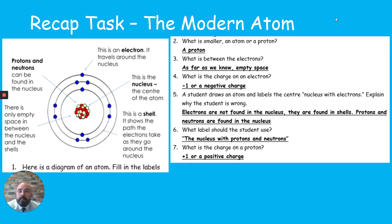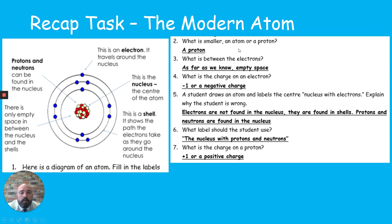Just a word of caution — when we look at atomic models, none of this is to scale, and we know electrons aren't blue and shells aren't like racetracks. It's a representation. The blue spheres are electrons, which travel around the nucleus in shells. The shell shows the path electrons take around the nucleus. In the centre we have the nucleus, which contains protons and neutrons, with empty space between the nucleus and the shells. As for what's between the electrons, as far as we know, it's empty space.